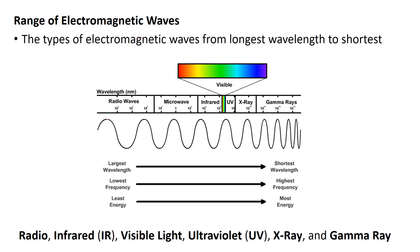As we go through the waves of the spectrum, we're going to go from radio waves, which will have the largest wavelength, to microwaves, which get a little bit shorter. And when you have the largest wavelength, you also have the lowest frequency and the lowest energy.